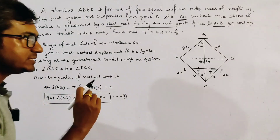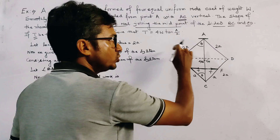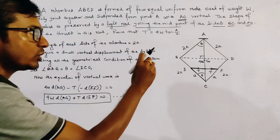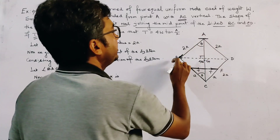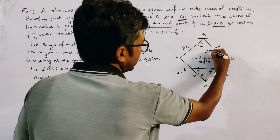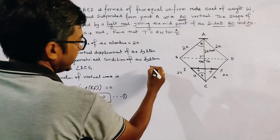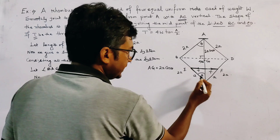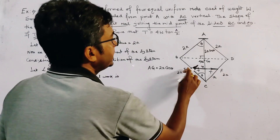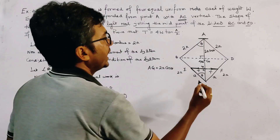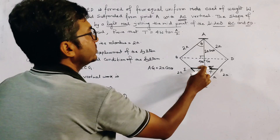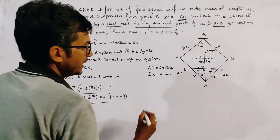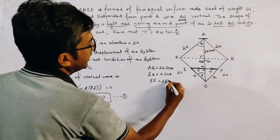We now find expressions for AG and EF. In triangle ABG, since the diagonals intersect at 90°, and AB = 2a with angle BAG = theta, we get AG = 2a·cos(theta). From triangle CEK, where CE = a and angle ECK = theta with a right angle at K, we get EK = a·sin(theta), so EF = 2·EK = 2a·sin(theta).